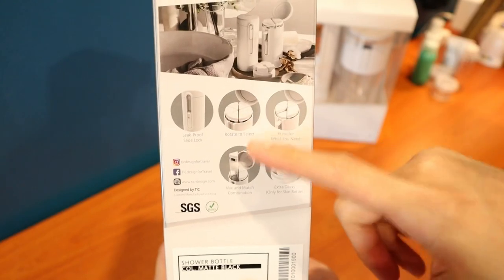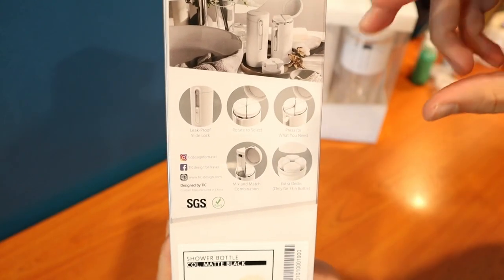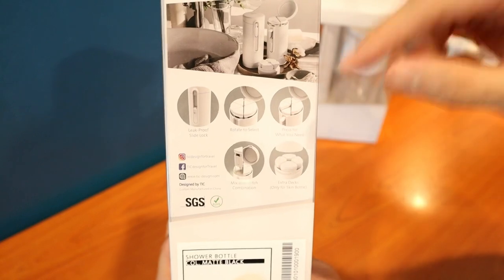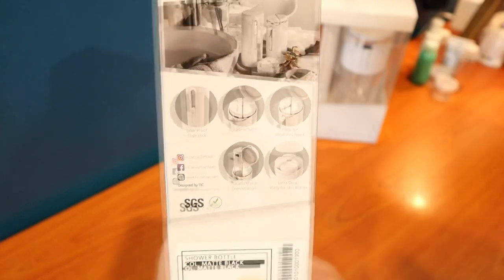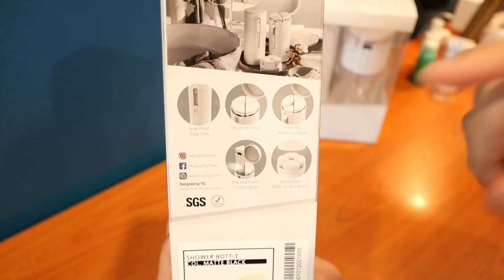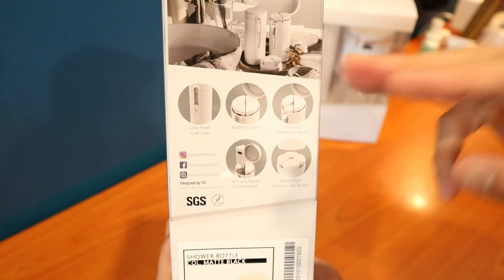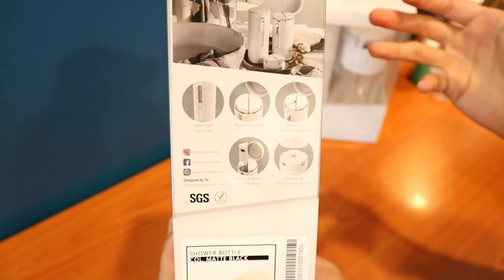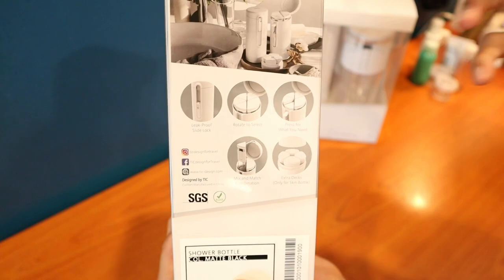When you take off the cap, you can just rotate to select what you want. And then when you find what you want, just press down on it and it'll dispense it. The setup is quite modular because although it comes with maybe three to four bottles inside, you can buy more and just mix and match to whatever your preference is.